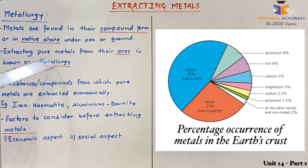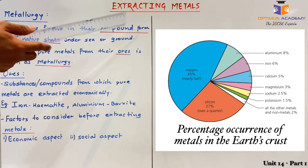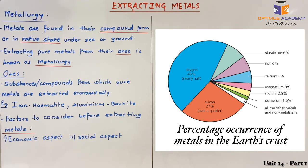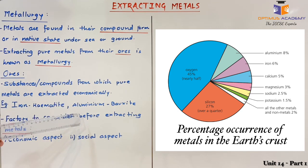Extracting pure metal from their ores is known as metallurgy. So when I am talking about the compound state of metals, if I want to separate pure metal from that compound, then the process is known as metallurgy. Next, we have ores of metals. Ores are the substances from which pure metals are extracted economically. For example, the ore of iron is known as hematite, and the ore of aluminium is bauxite.